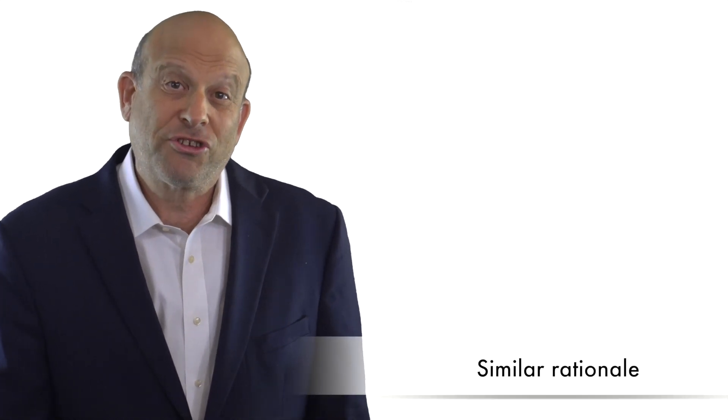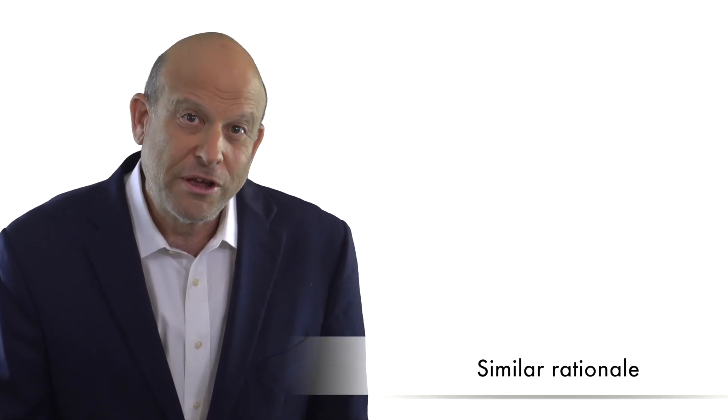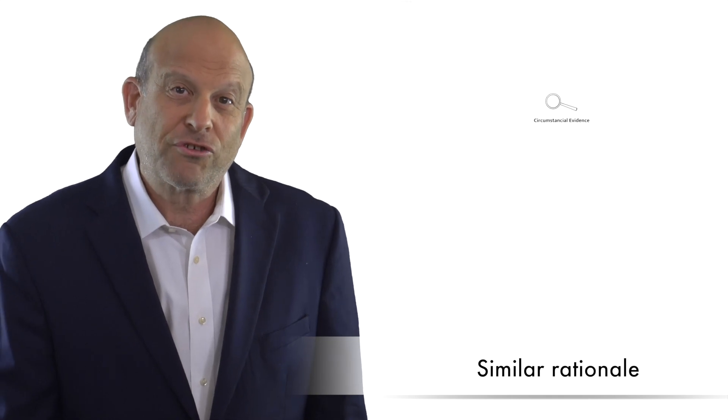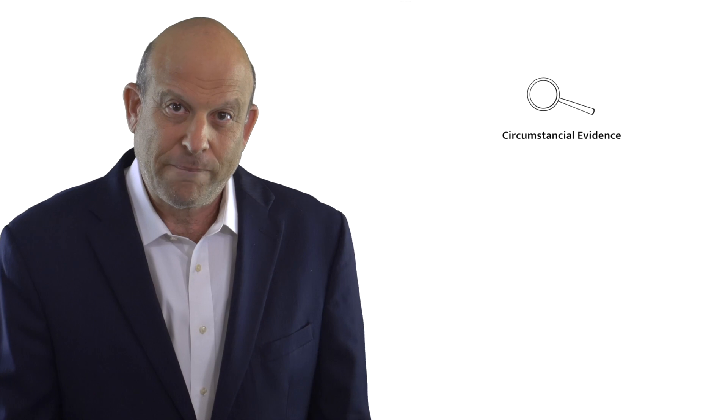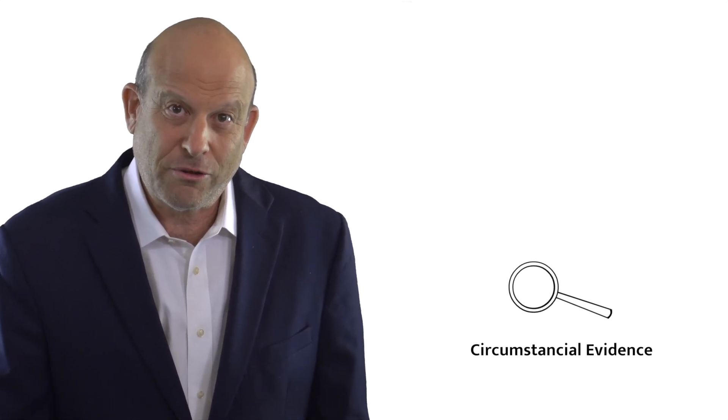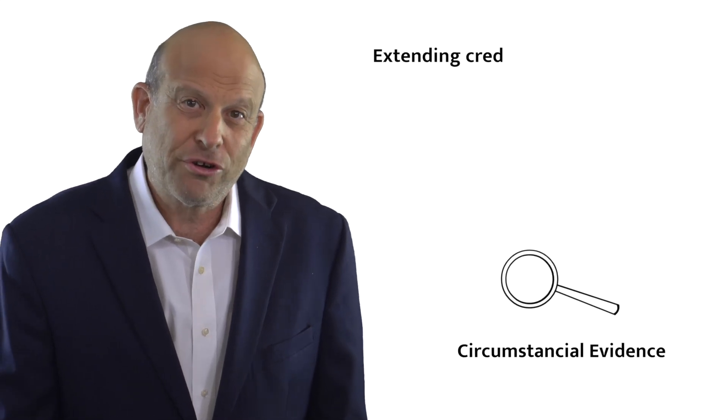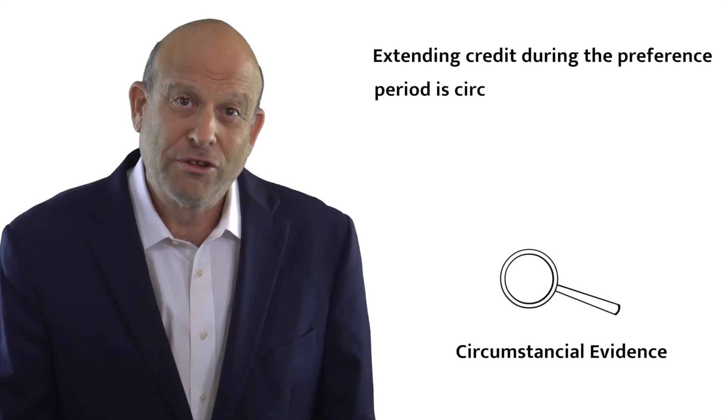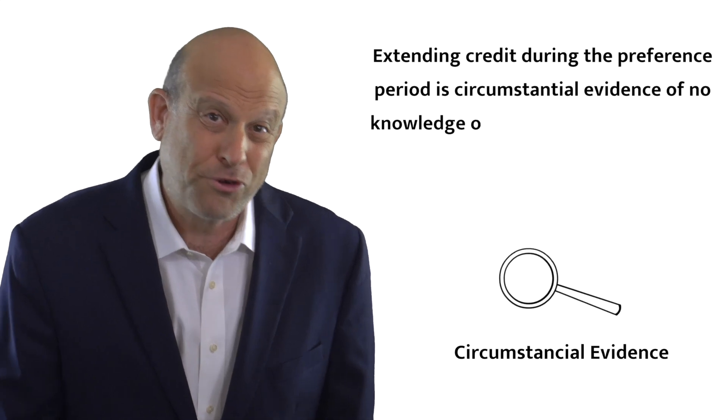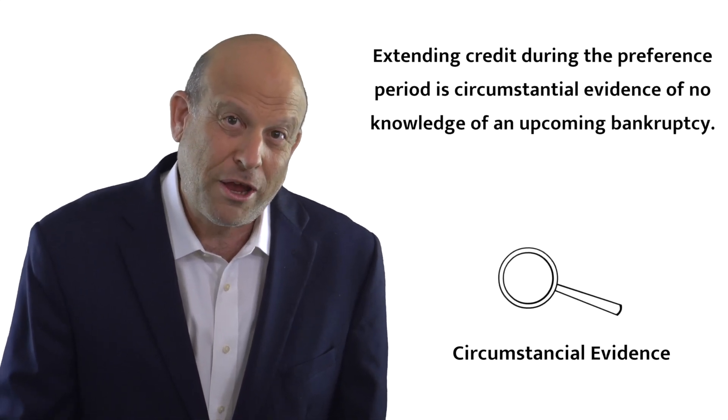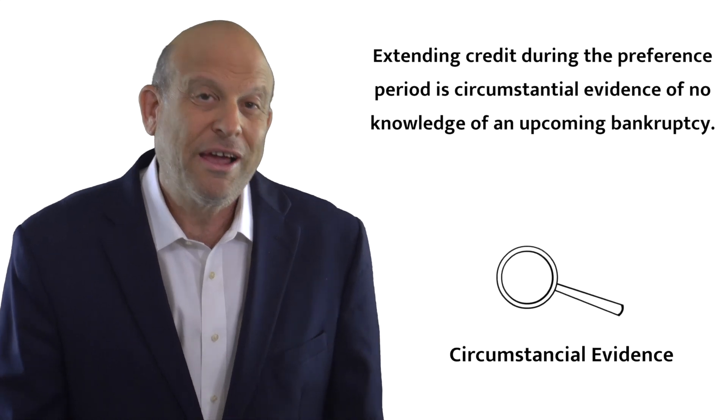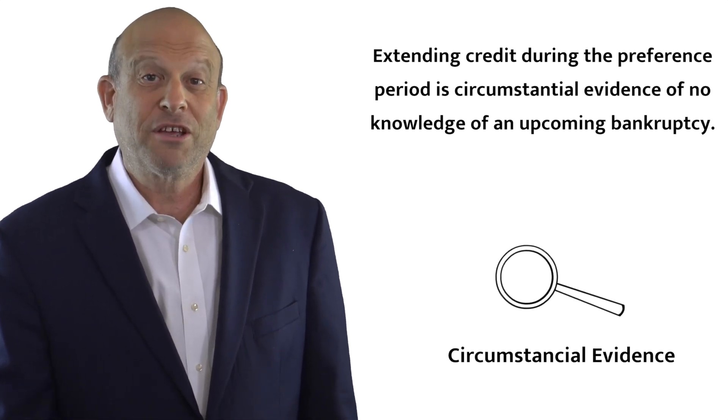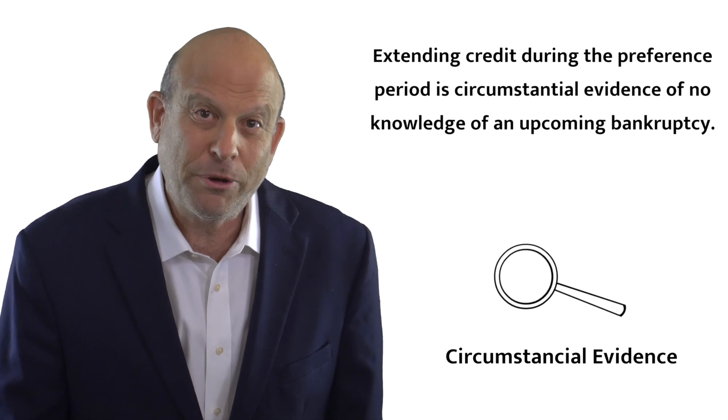The rationale is similar to the ordinary course defense. It's circumstantial evidence of no bad intention. How is it circumstantial evidence of no intent to be preferred? Because it would be irrational for a creditor to pressure the debtor for a pre-bankruptcy preferential payment because of a looming bankruptcy and shortly after extend unsecured credit to the very same company.